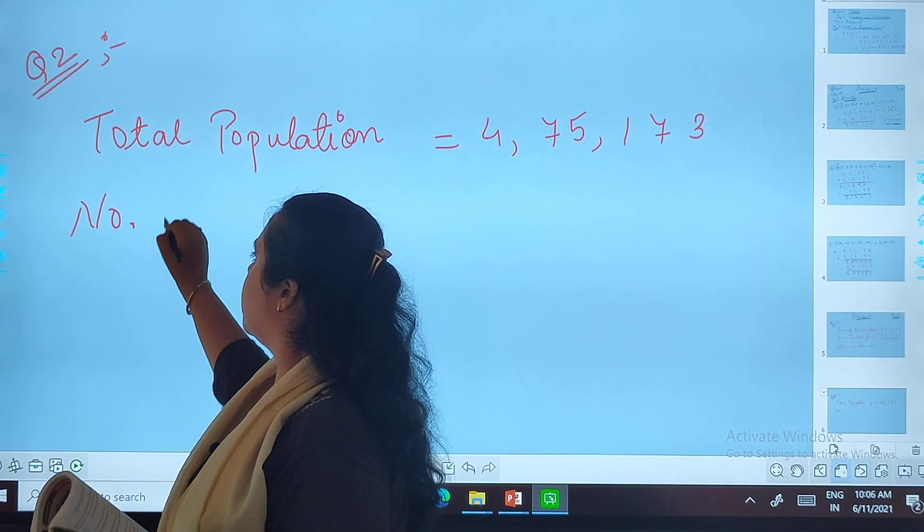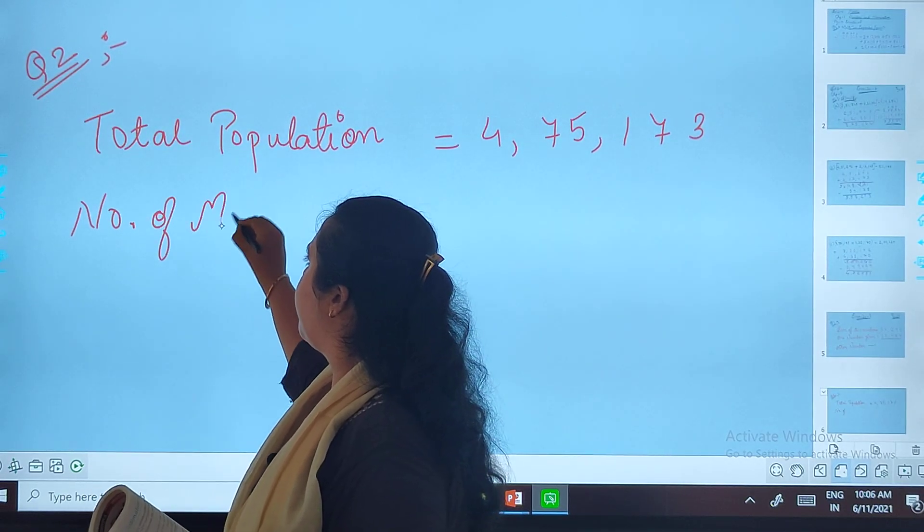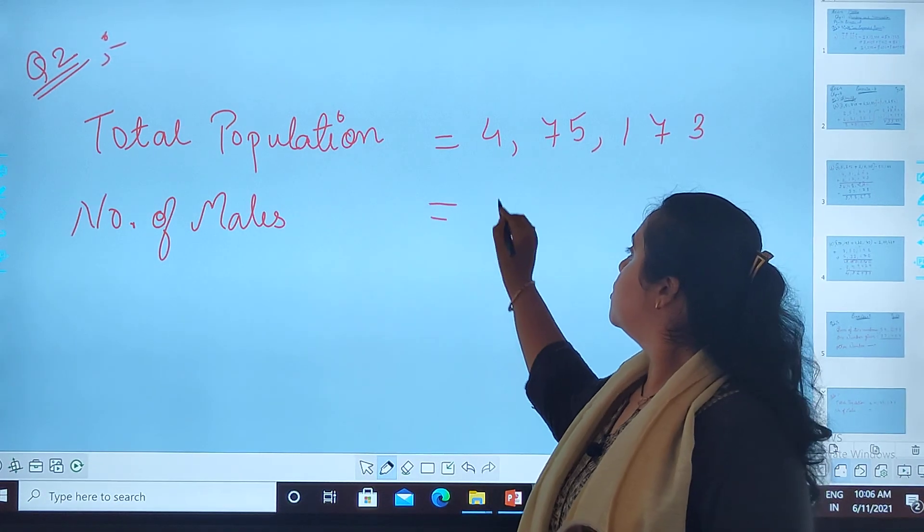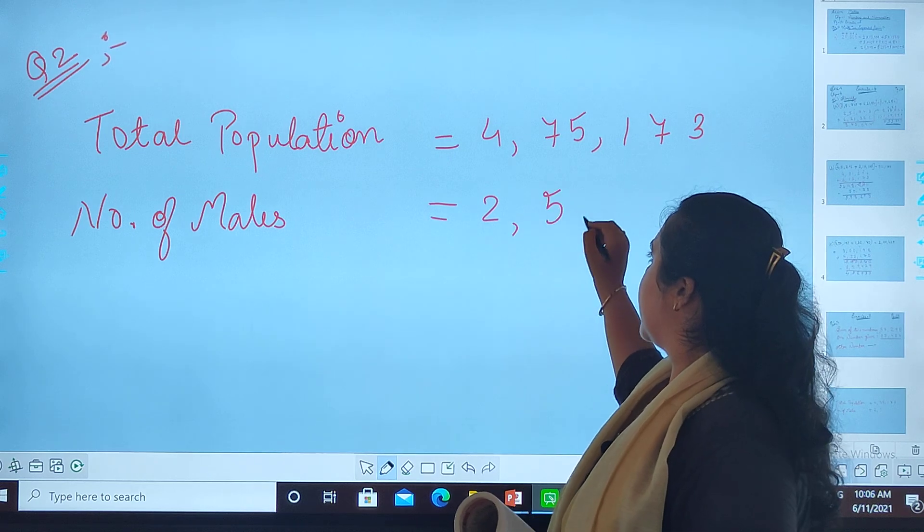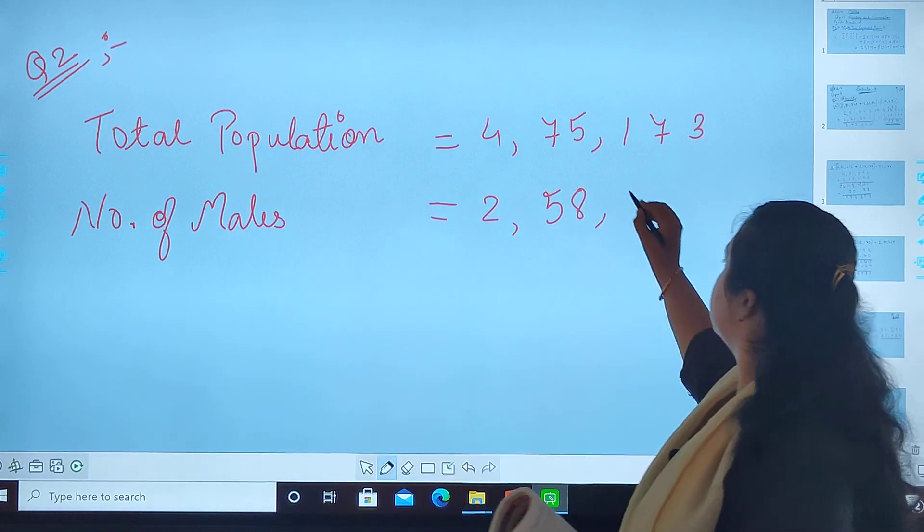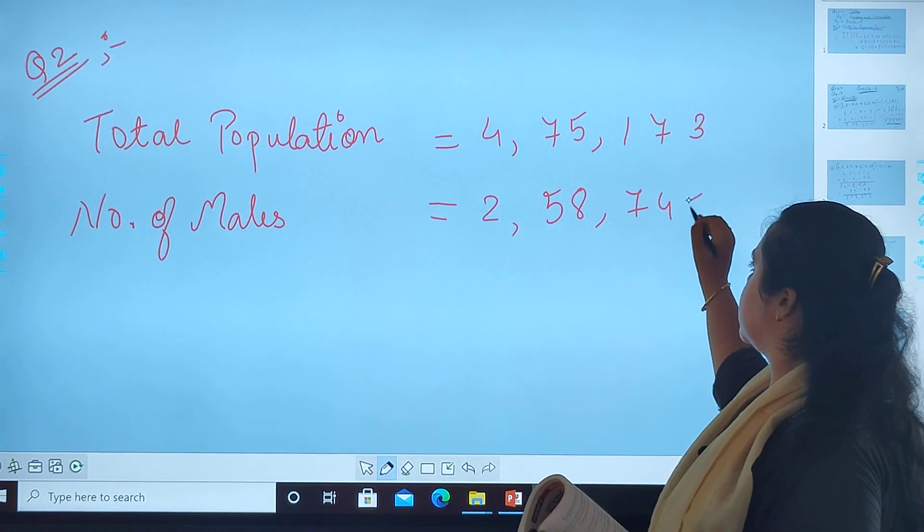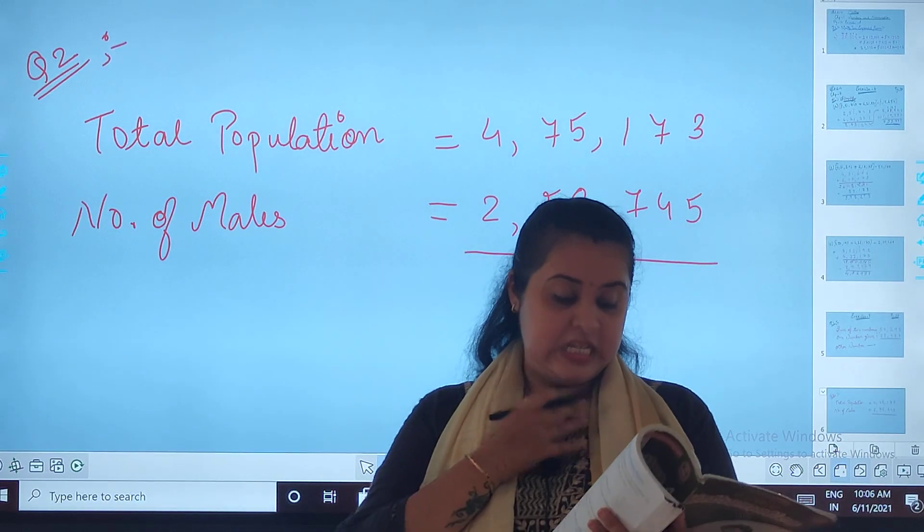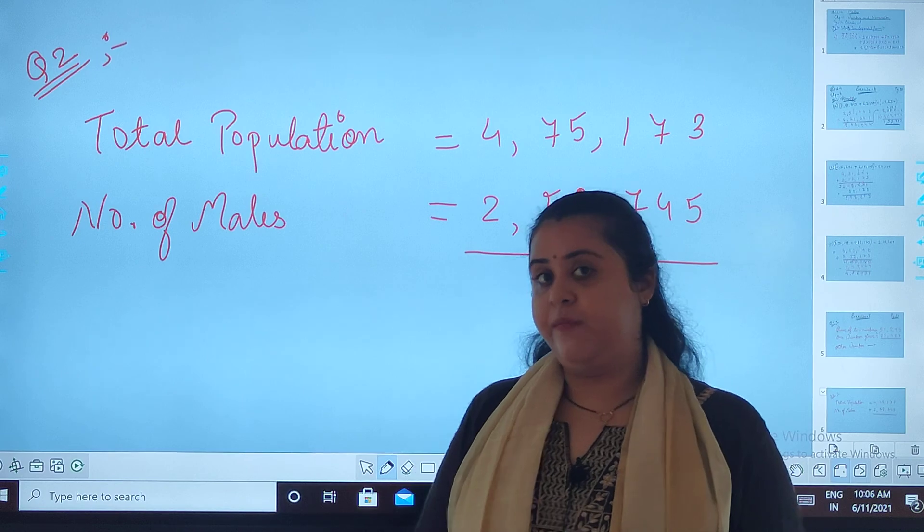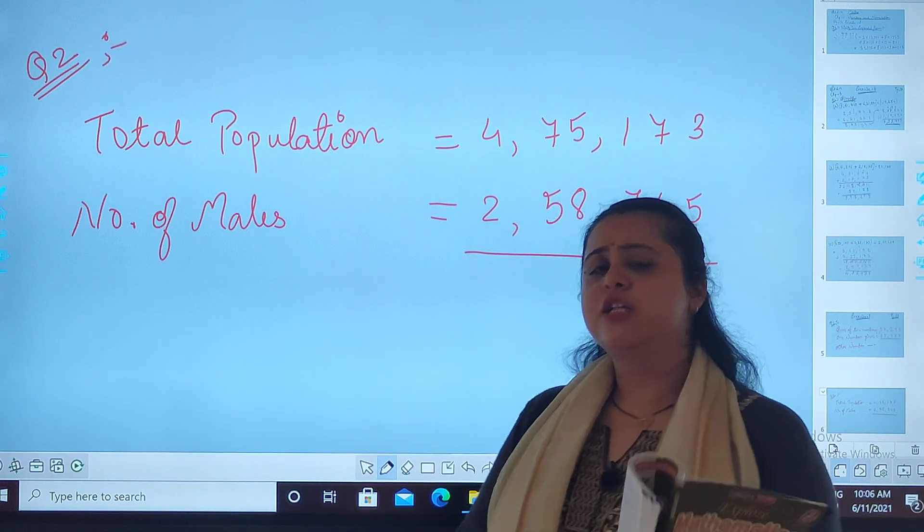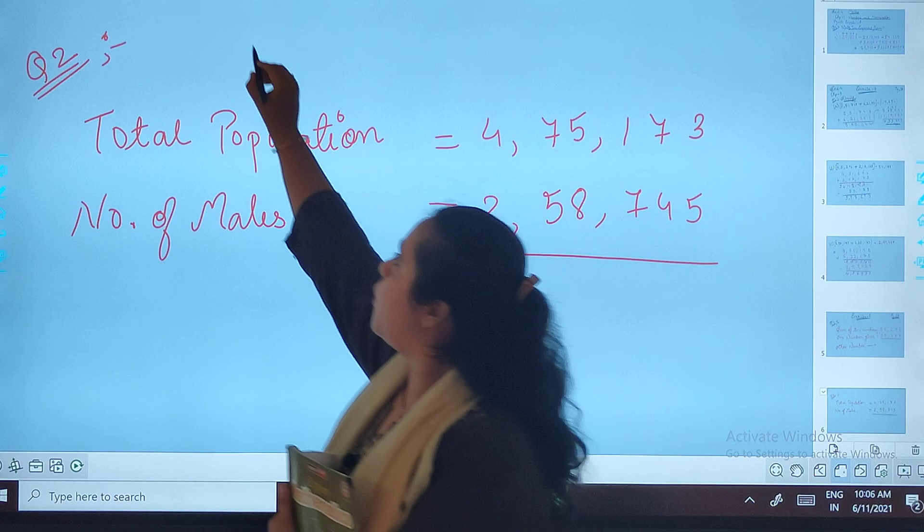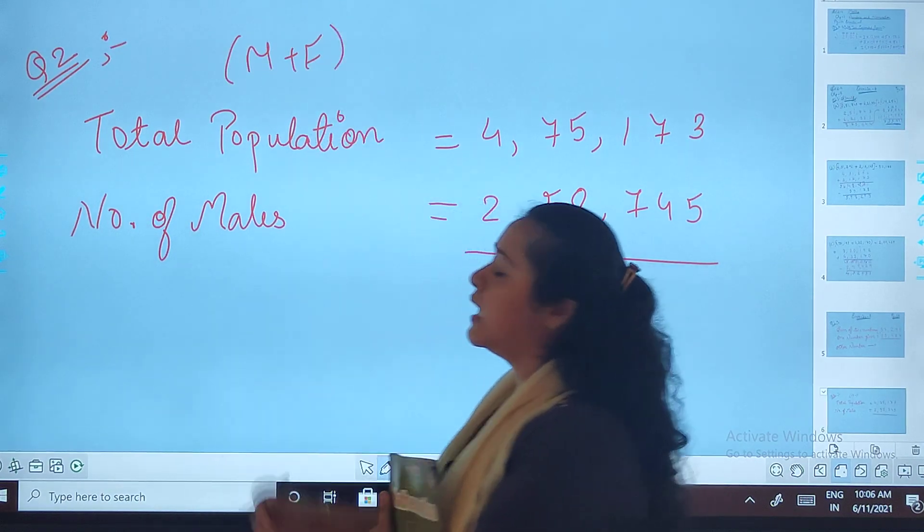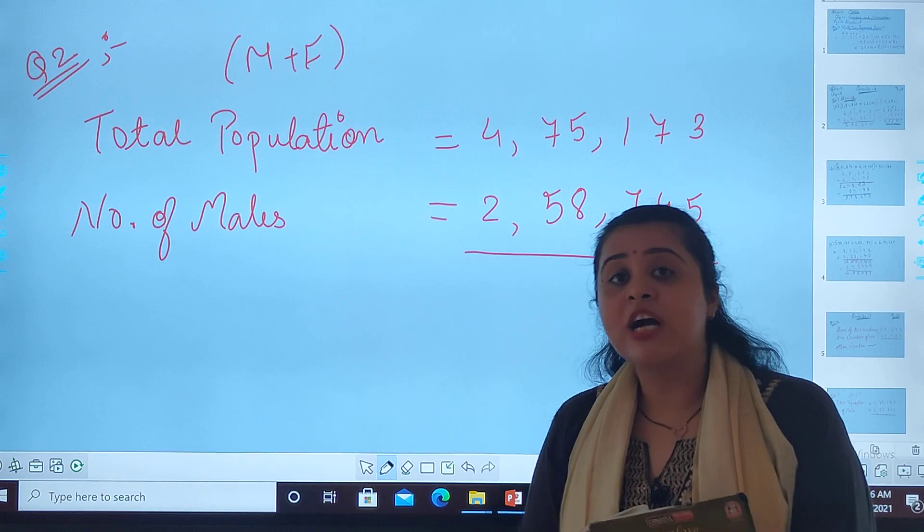Number of males is 2,58,745. I am going to find the number of females in the city. So what should I do? The total population means that the male and female is related to each other. I am going to give them the total.